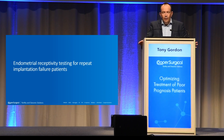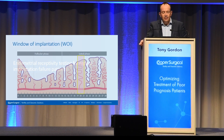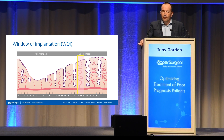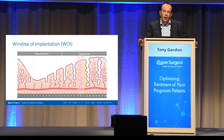If we look at the window of implantation and the menstrual cycle, the textbooks tell us that after ovulation — really five days after ovulation — we have a window of implantation where the endometrium is most receptive to the embryo being placed back. That is the case for most women. We have been looking at this at Cooper Genomics and looking to see if we can identify those patients where the window of implantation is displaced.